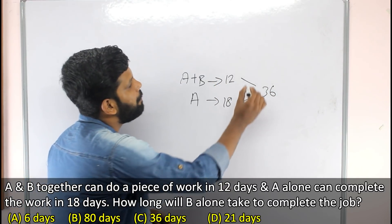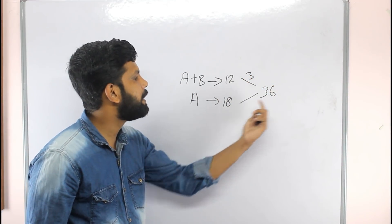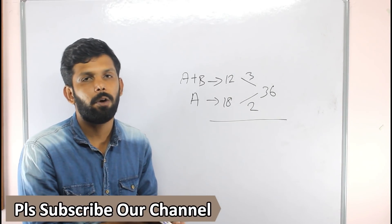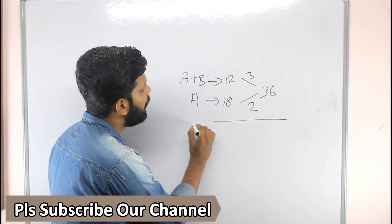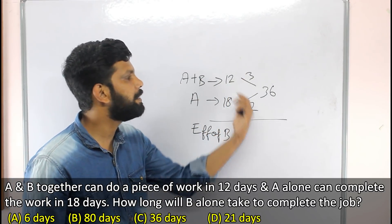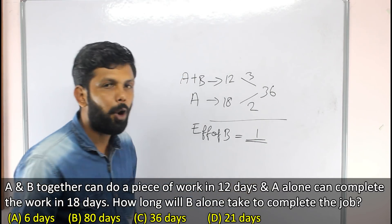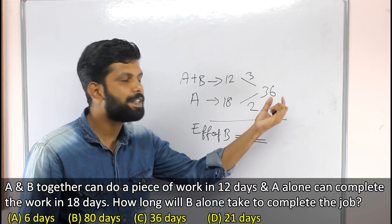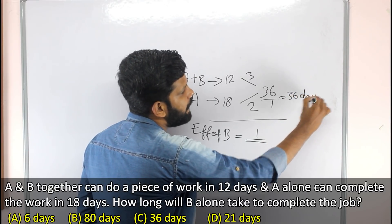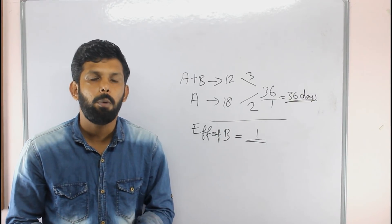Total work is 36 units. A plus B's efficiency is 36 divided by 12 equals 3. A's efficiency is 36 divided by 18 equals 2. B's efficiency is 3 minus 2 equals 1. B alone will take 36 divided by 1 equals 36 days. Very simple — time and work is solved.